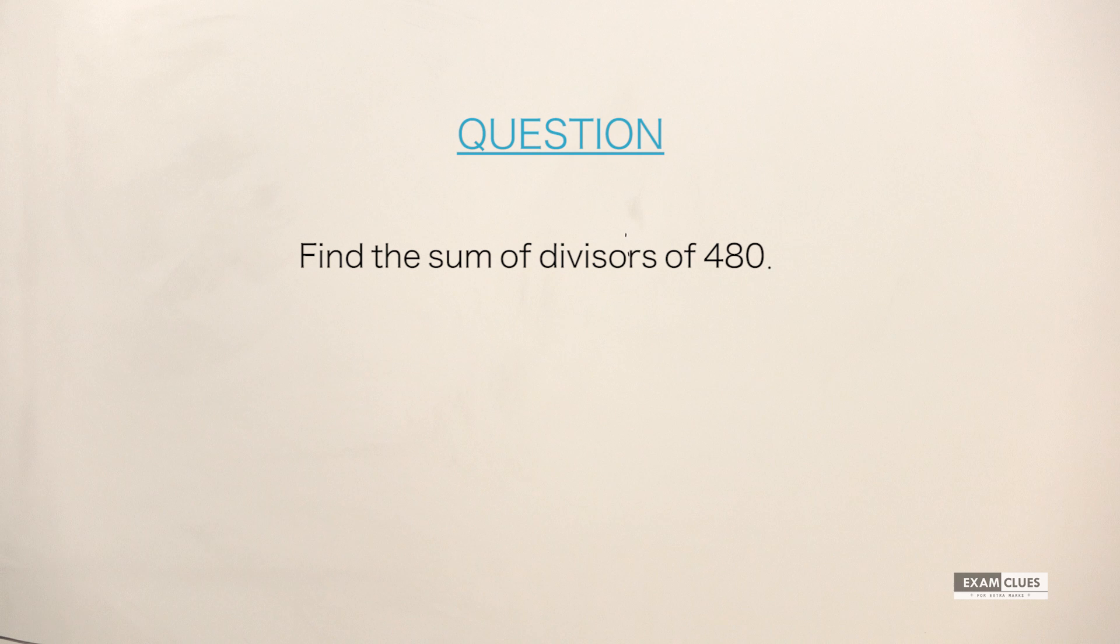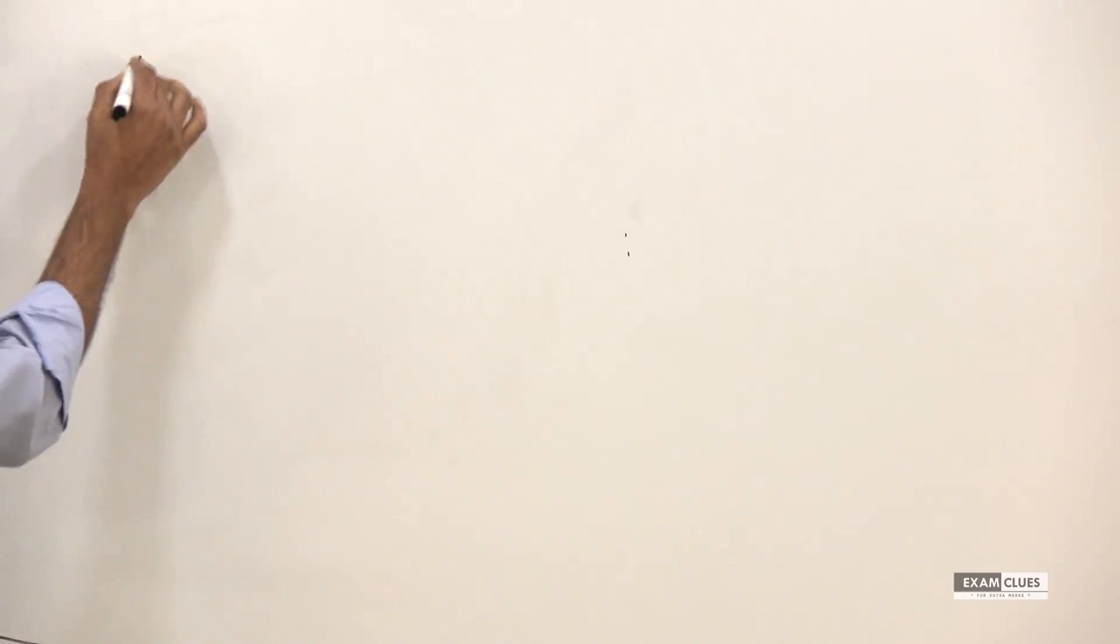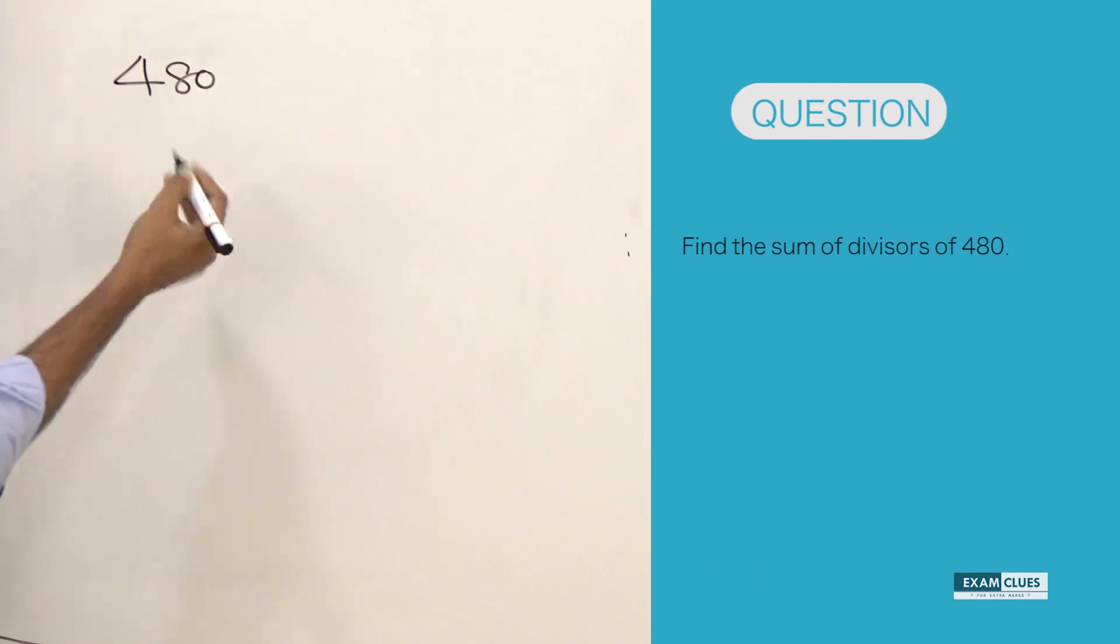The question says find the sum of the divisors of 480, or I would rephrase it, find the sum of the factors of 480. So how to solve this question? I'm just writing it here: 480. What are the factors?